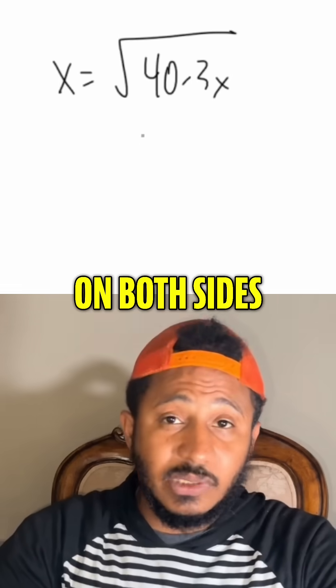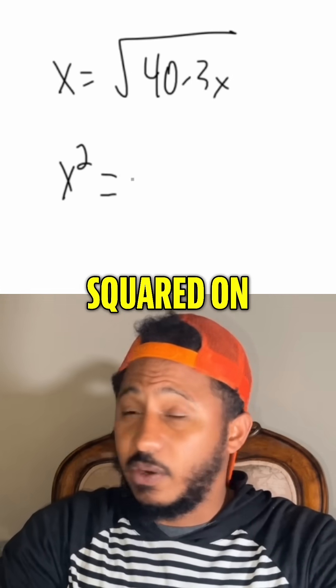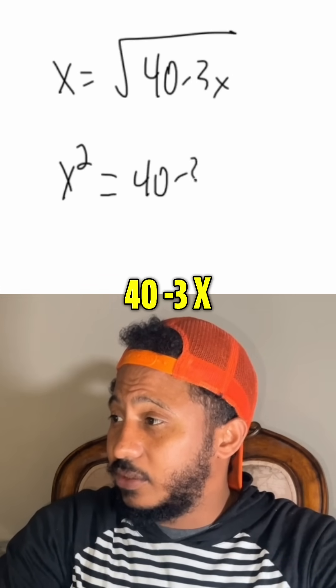So then we would square both sides. Square both sides. It gets rid of the radical. So here we get x squared equals, squared on the right-hand side, 40 minus 3x.